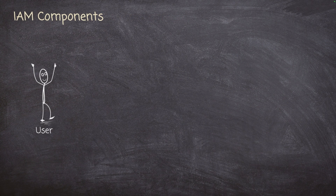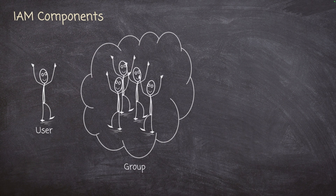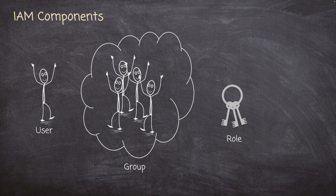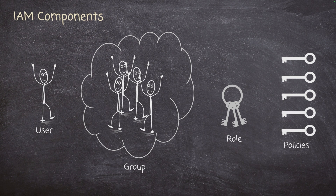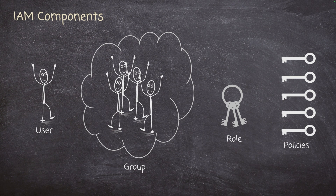Let's look at the IAM components. There is a user — that's a person like us that would log into our account. We have groups, which are just groups of users. We can define a group and put users in it. We also have roles. These are common concepts if you're familiar with other security frameworks. In IAM, we also have something called a policy. I like to envision a policy as a key that lets us through a particular locked door. We can take those policies and put them on a key ring, which is a role. We can hand that role to a group, users, a service, or systems. Whoever receives that role then has access to whatever those policies permit.